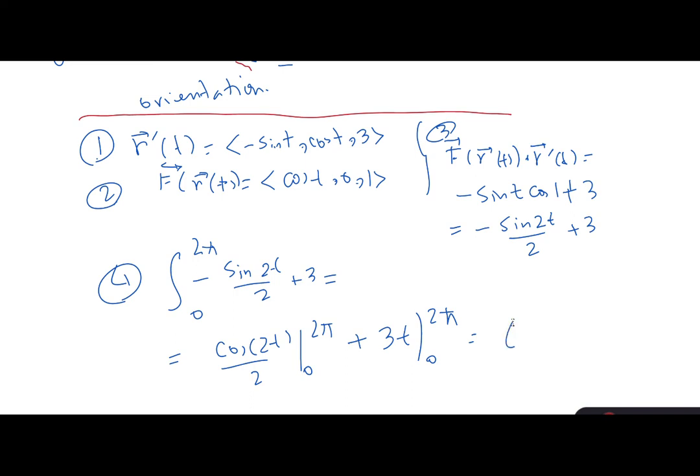The second term is going to be 6π. So this is the work done by the vector field on the particle in moving it along the helix from the bottom to the place at T equal to 2π.